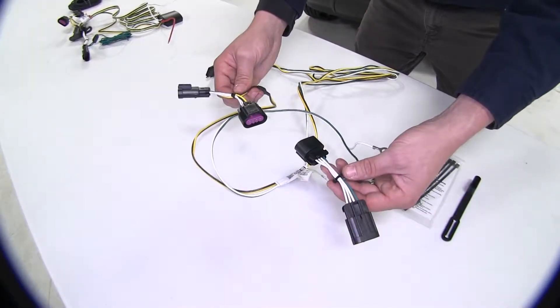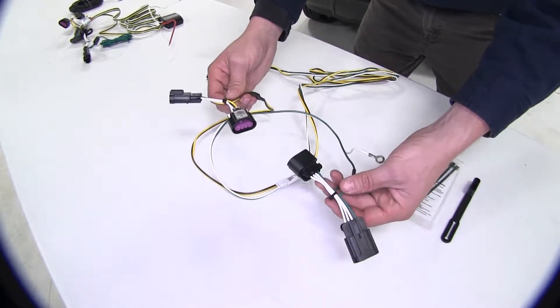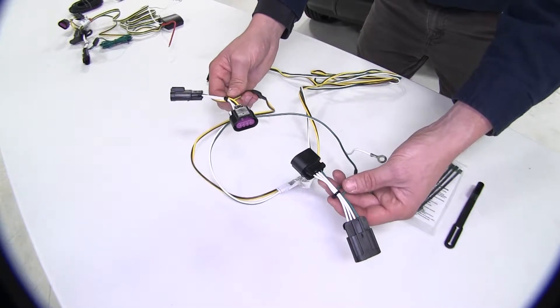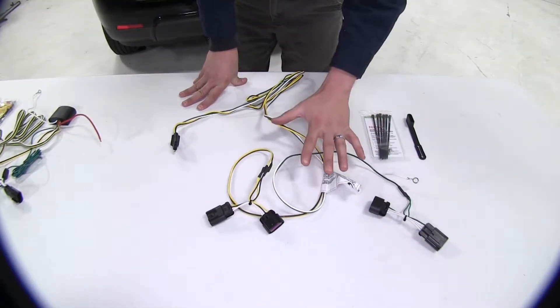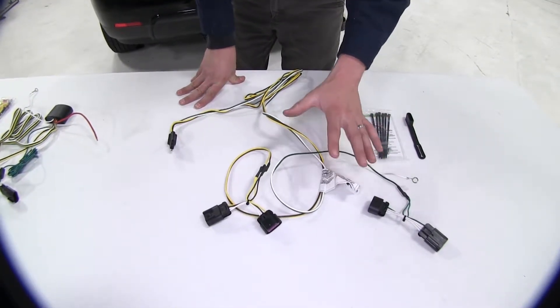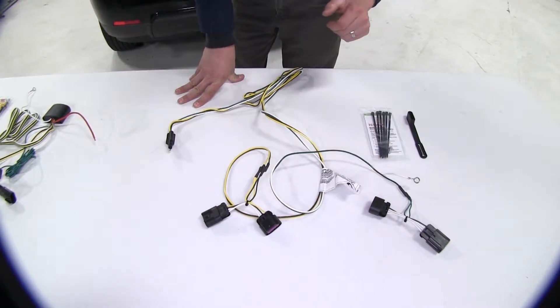The Curt wiring harness is just going to connect within our tail lights and won't offer you the same protection. Because the Curt wiring harness doesn't have a power module, the installation is going to be quick and easy, and you'll be on the road in no time.